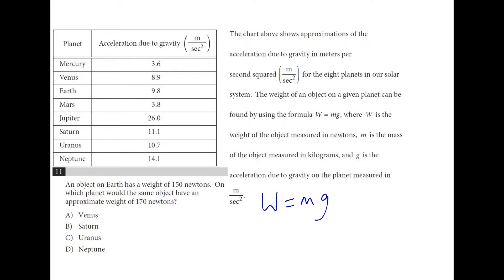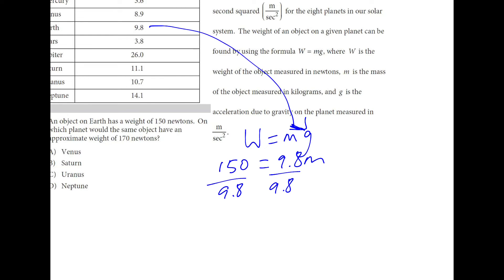So they give us a two-part scenario on Earth, which has 9.8 for the g, would have a weight of 150. So 150 is equal to 9.8m. So this is going to be ballpark 150 divided by 10, it's going to be about 15. So m is around 15, maybe a little bit more.